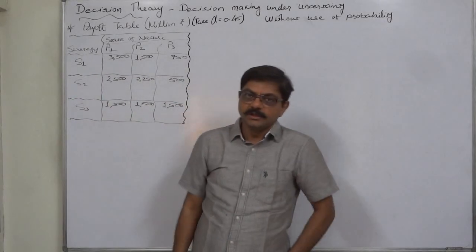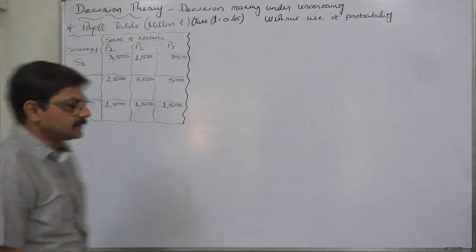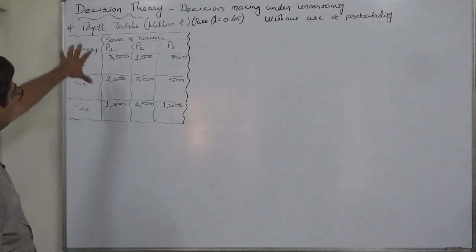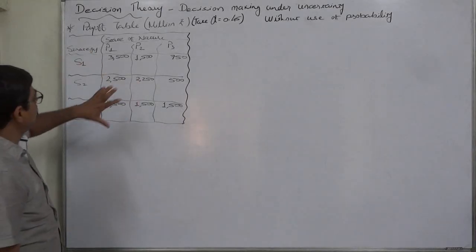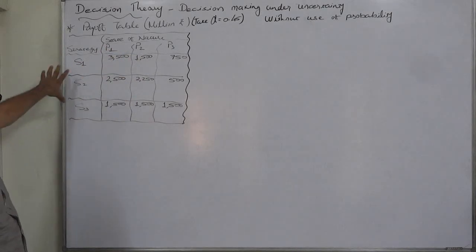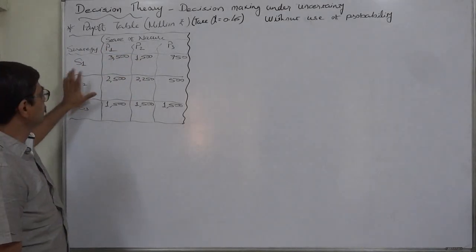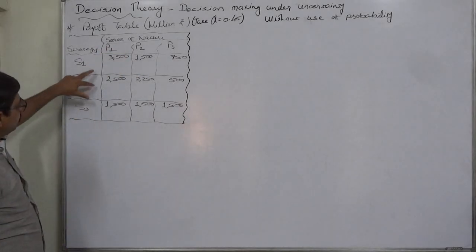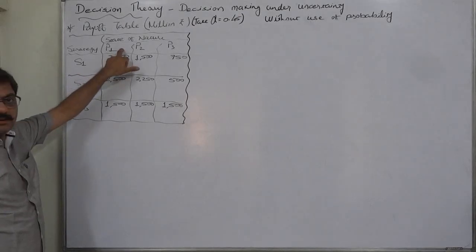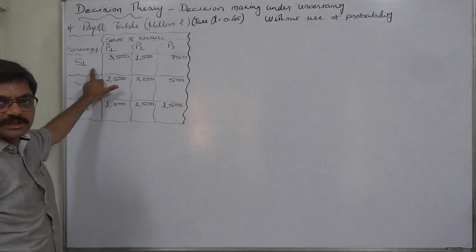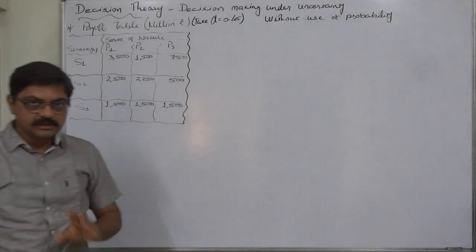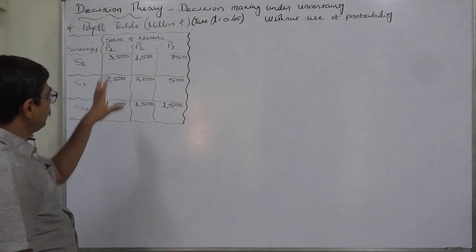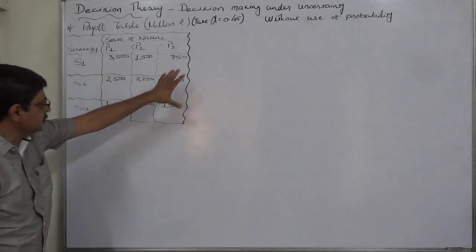Hello and welcome to decision theory. Let's take all the payoff and regret criteria in one case. This is a decision problem and payoff table. There are three strategies — that means alternatives or actions — and three possible states of nature. The signs used are S and P. S is used for strategies instead of A for alternatives, so please be prepared for this kind of change in the format of the question.